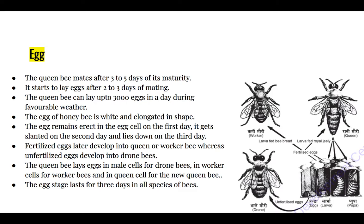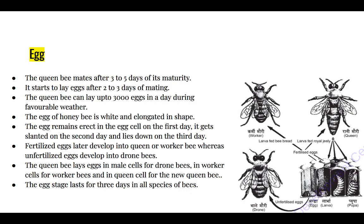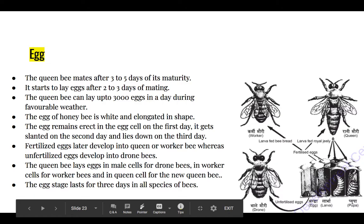The queen bee does not lay eggs randomly. There is a separate cell for each type of bee. If the queen bee wants to make worker bees, it lays eggs in worker cells. For drone bees, it lays eggs in drone cells, and for a new queen bee, it lays eggs in queen cells. These eggs last for three days in all kinds of bees.